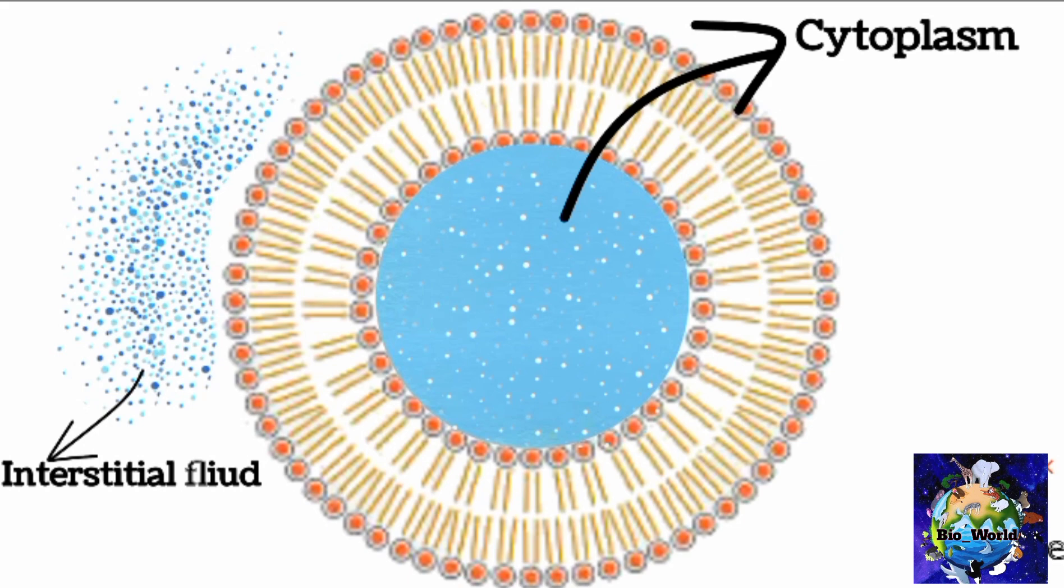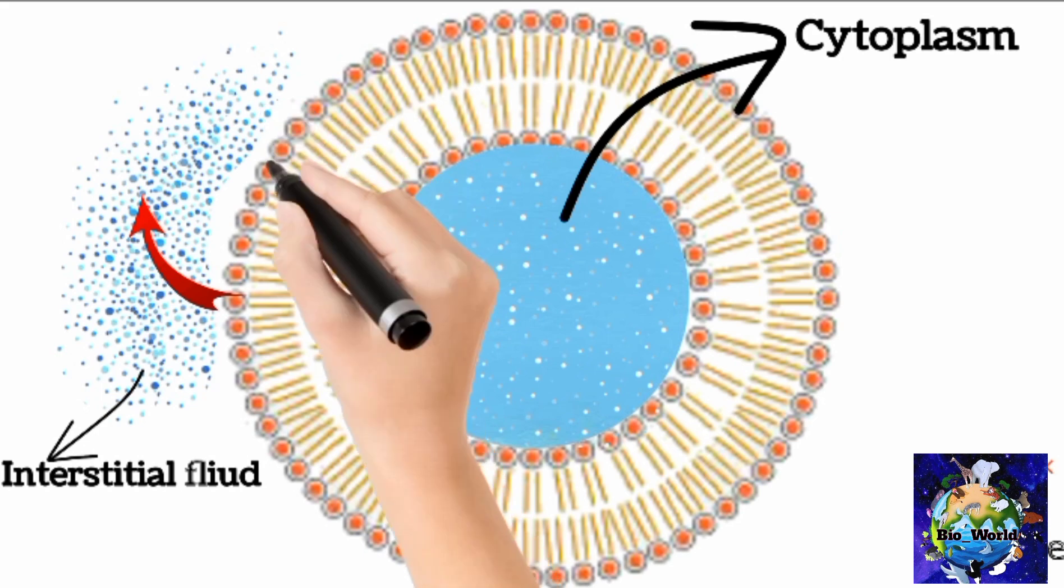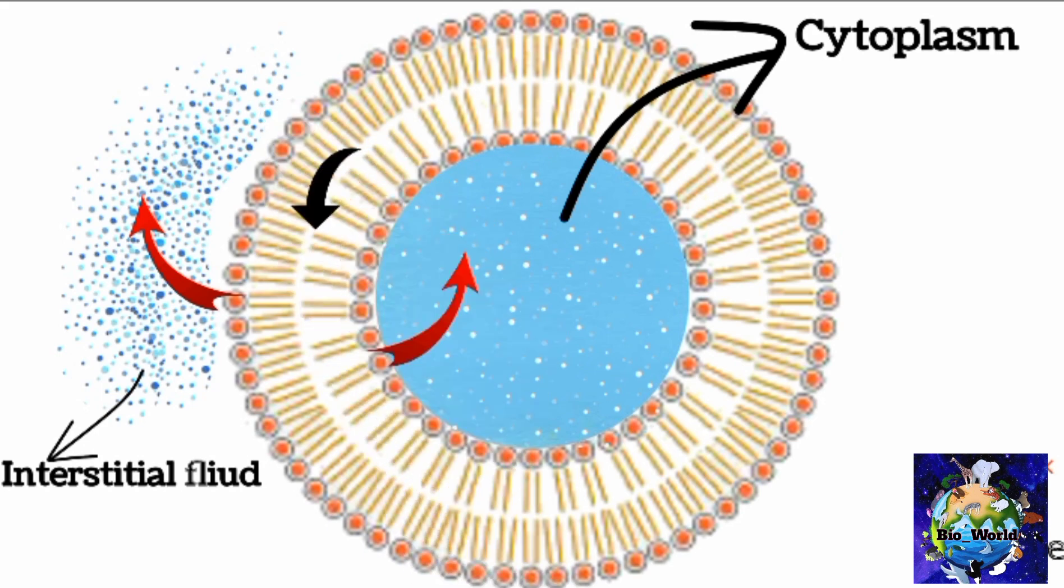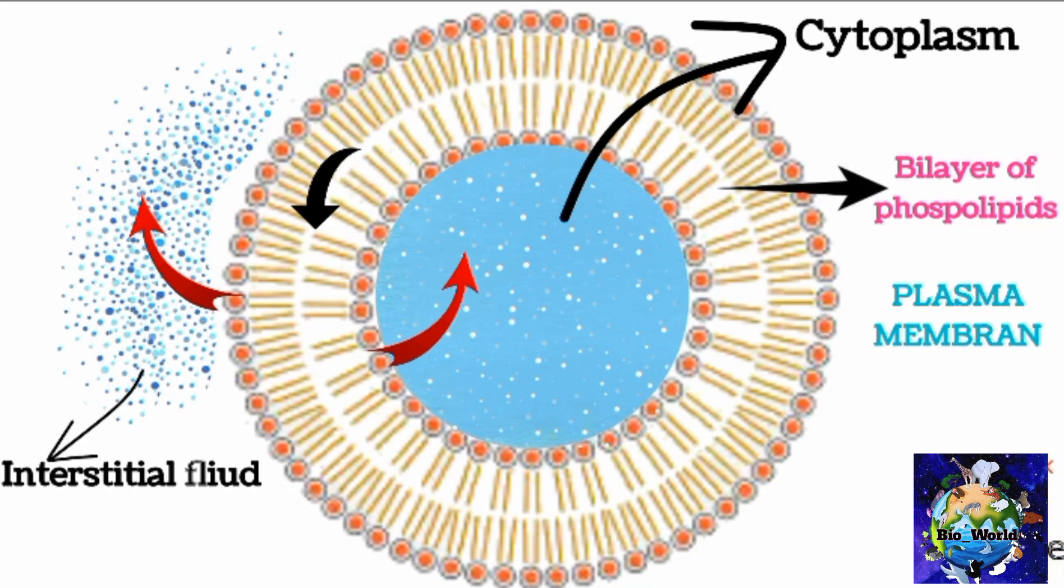Phospholipid molecules are arranged in bilayer like this. Heads are water loving therefore facing the liquid on both sides, whereas tails are water repellent, so that's why in between the liquid because they don't want to face water. These two layers of phospholipids is considered a single plasma membrane.